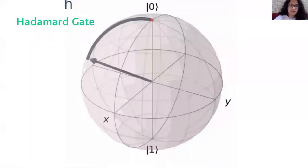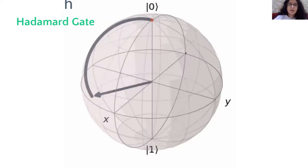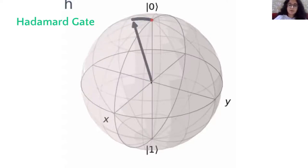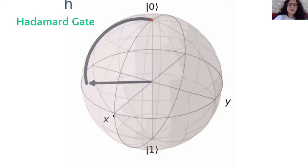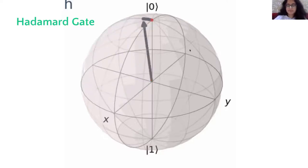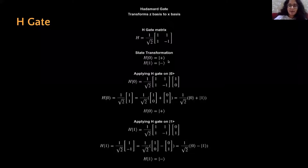Continuing with the list of single qubit gates, next is the Hadamard gate, also known as the H gate. As you can see in the Bloch sphere rotation, it transforms ket0 to the ket plus state and ket1 to the ket minus state. It transforms any qubit measurable from the Z axis in terms of ket0 and ket1 into a qubit measurable with respect to the X axis, where the probabilities correspond to ket plus and ket minus. This is the matrix that transforms from the Z basis to the X basis, and when applied on ket0 it gives ket plus.